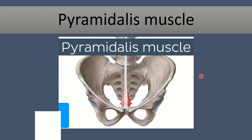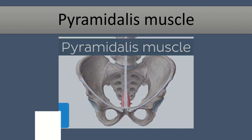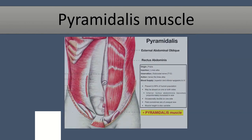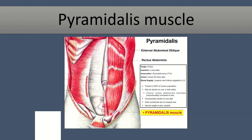Finally, the pyramidalis muscle — it is a small triangular muscle. It lies in the lower part of the abdomen and is attached to the pubic symphysis. We can see in another picture this small pyramidalis muscle. It is at the attachment of the rectus abdominis muscle and is one of the triangular muscles of the abdomen.